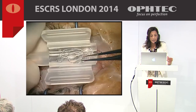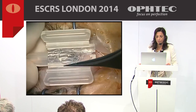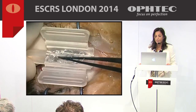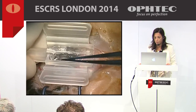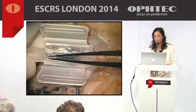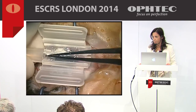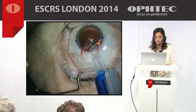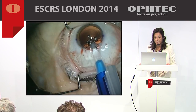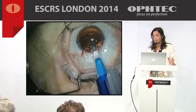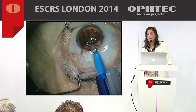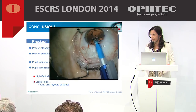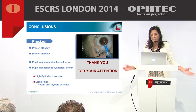In conclusion, this IOL has provided efficacy and stability. Our first results seem to show pupil independence for spherical and cylinder power, which is really important to achieve excellent visual performance, especially for high cylinder corrections and large pupil cases more common in young and myopic patients.